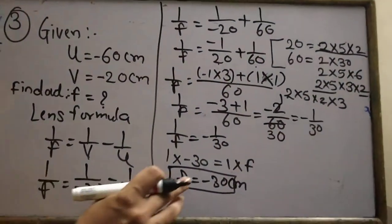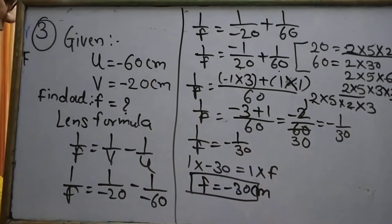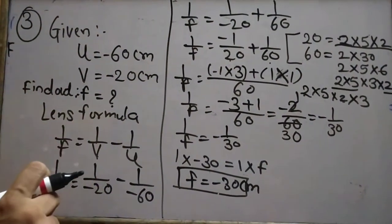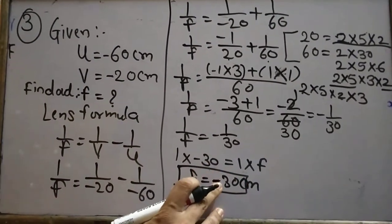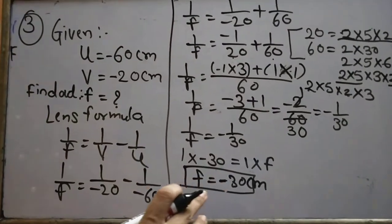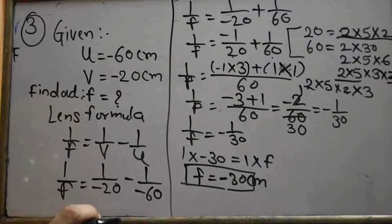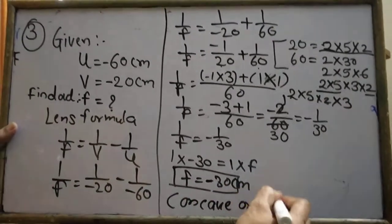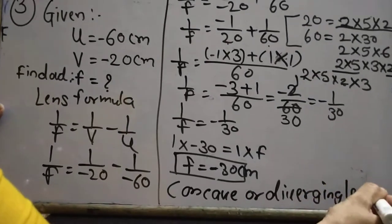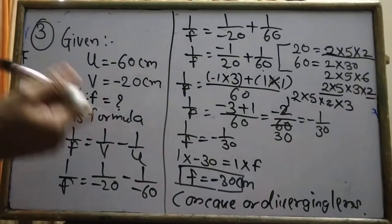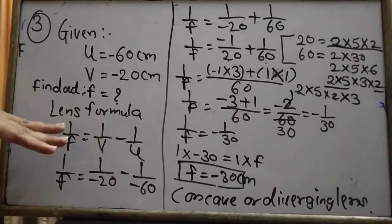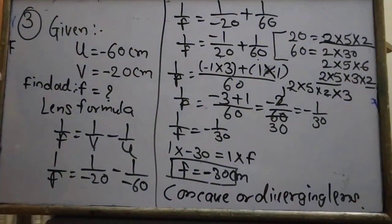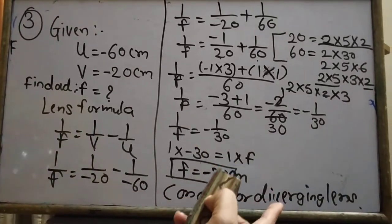The focal length is −30 cm. Since the focal length is negative, the lens is a concave and diverging lens. Positive focal length means convex and converging; negative means concave and diverging.